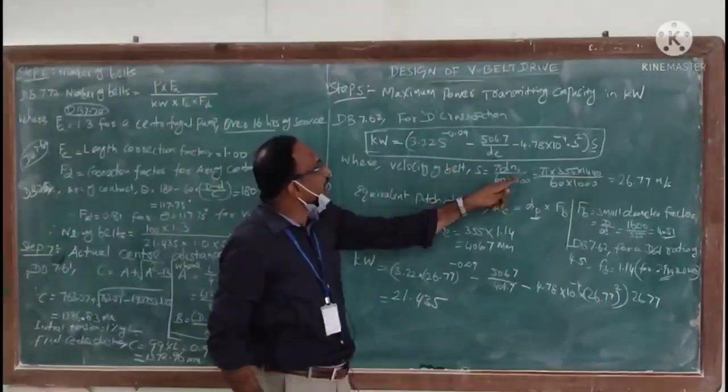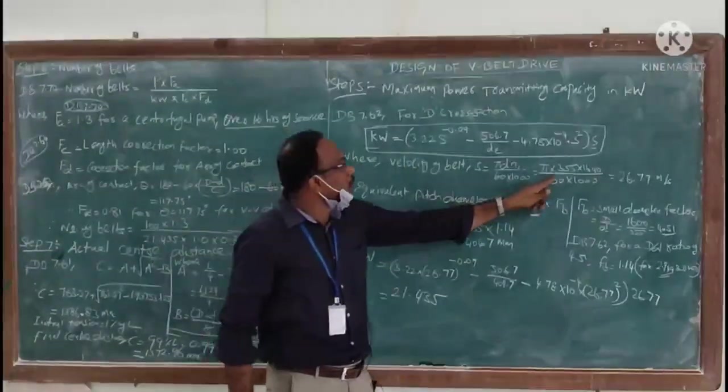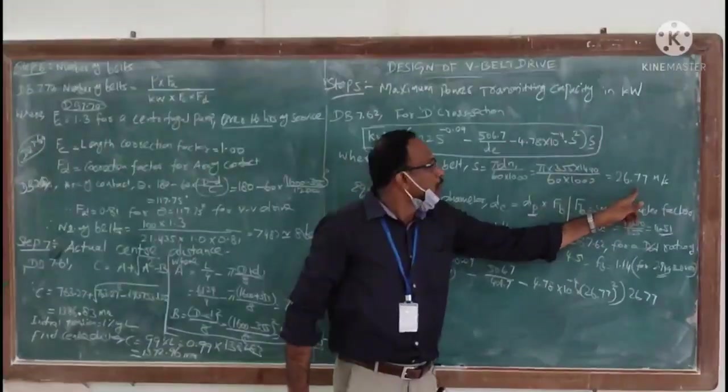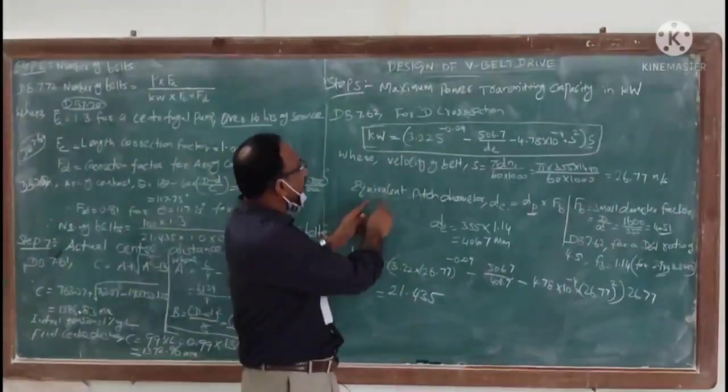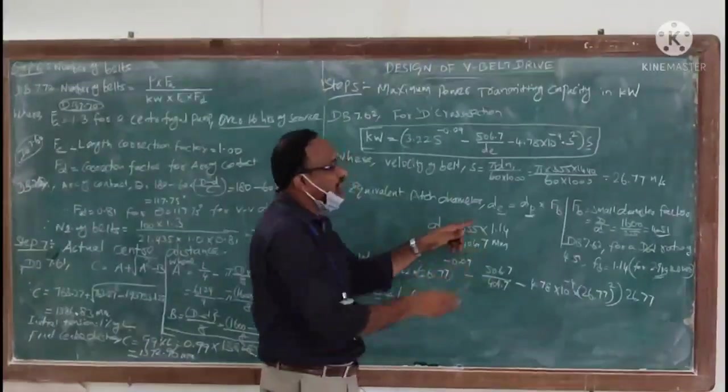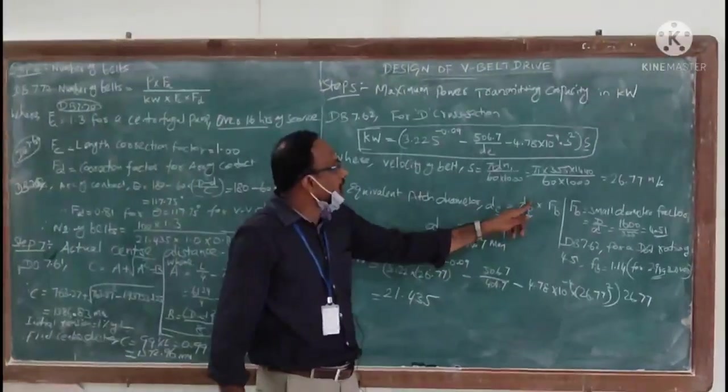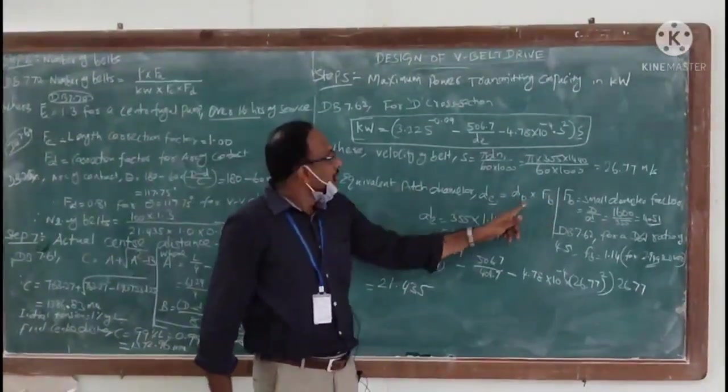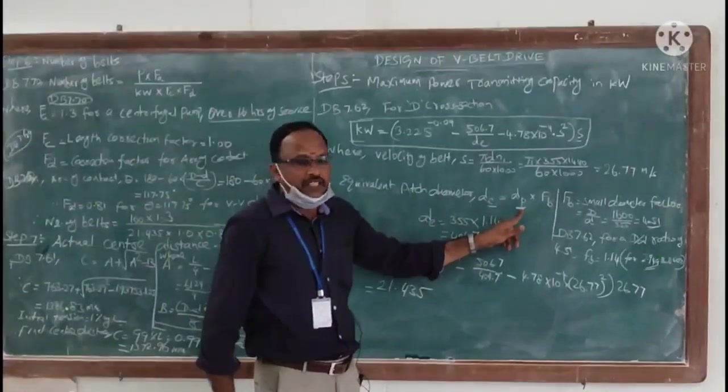S equals pi D N1 by 60 times 1000. Substitute the values, we can get as 26.77 meter per second. The equivalent pitch diameter T_E is equal to Tp times Fv.